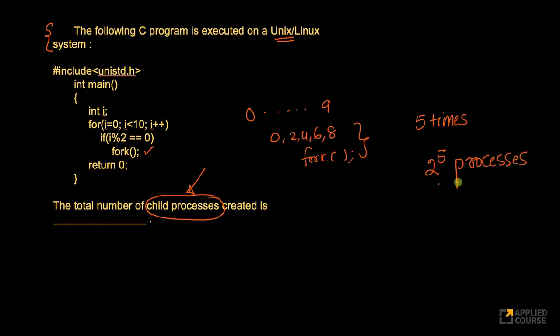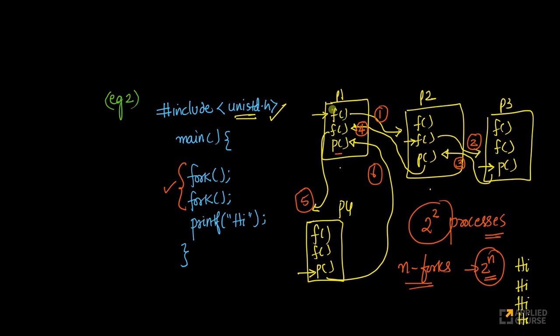While there are 2 power 5 processes, the first process that executed, look at this, the very first process is the parent process of all the other child processes. Because the first process which started, even in this example, p1 is the parent process. P2, p3, p4 are all child processes.